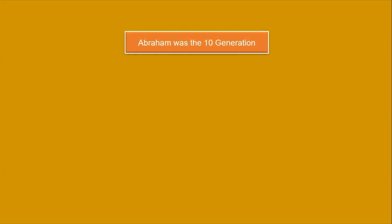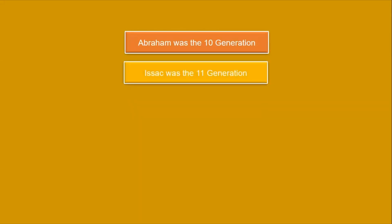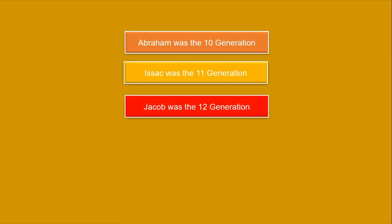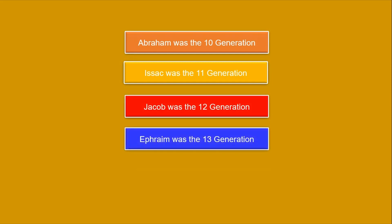Abraham was the 10th generation from Shem. Isaac was the 11th generation, which was his son. Jacob was the 12th generation, and Ephraim was the 13th generation. So this is where we get the number 13 from — it's from Ephraim. And that's why you see the number 13 everywhere on our symbols.